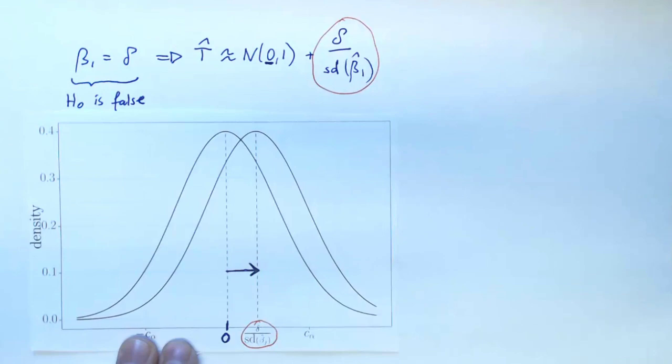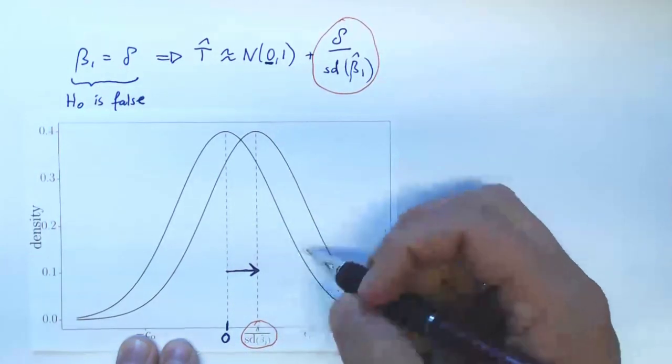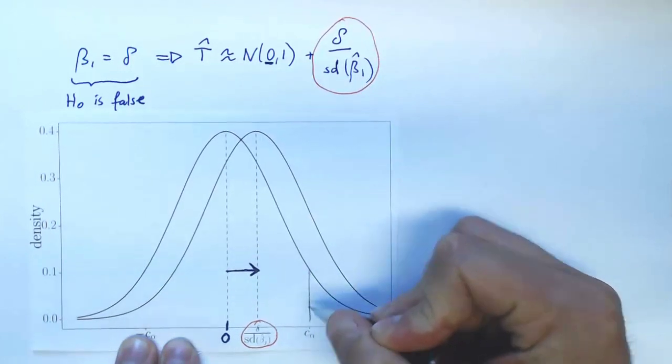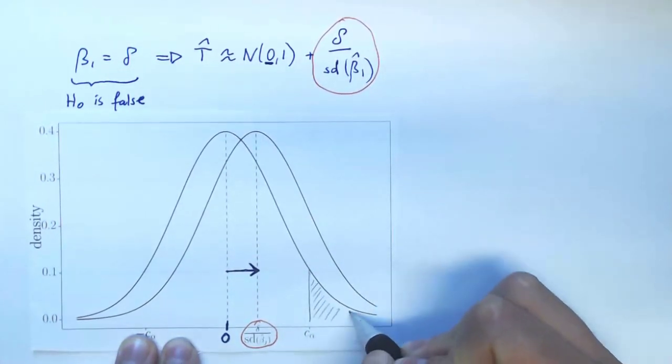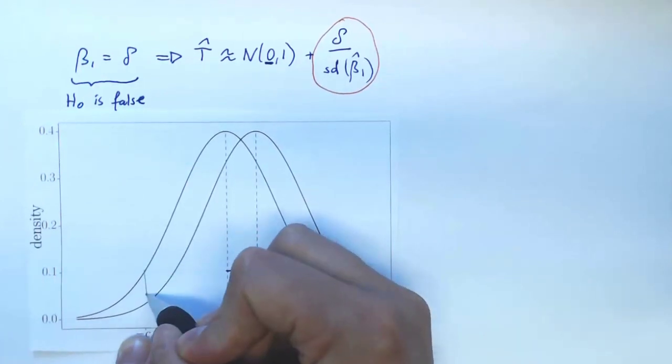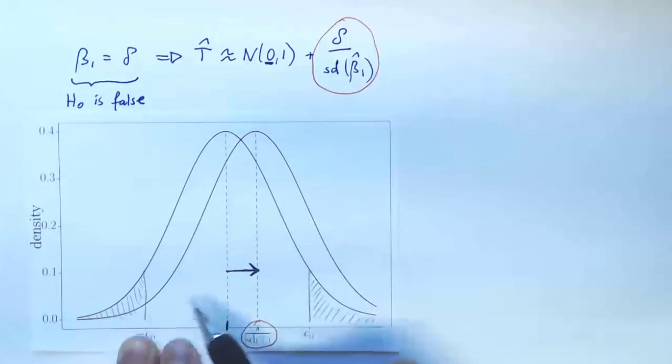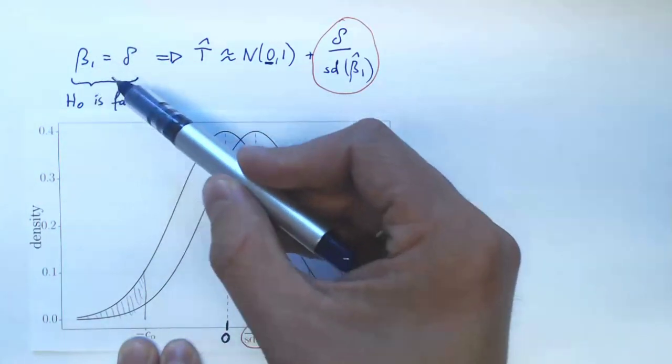Now what is the probability that our test rejects if this is true? Well, first of note that what we already know, if we just look at the standard normal density, so before it has been shifted, we know that these two areas here, they sum to alpha, they're both alpha half.